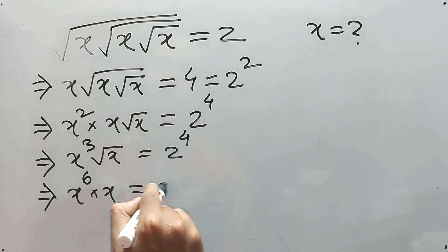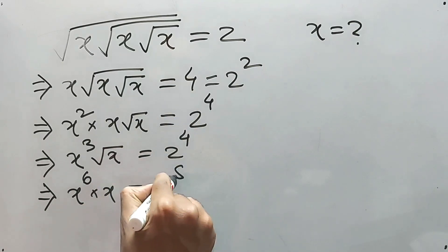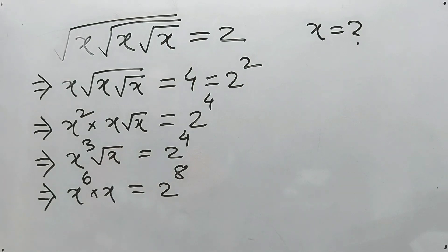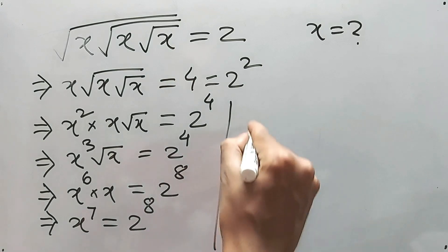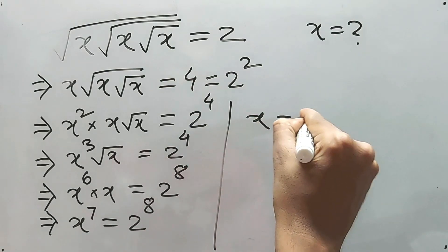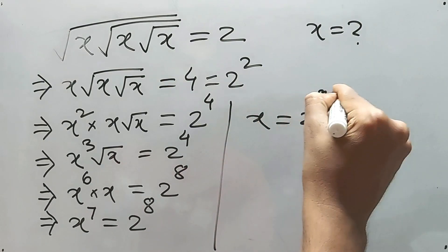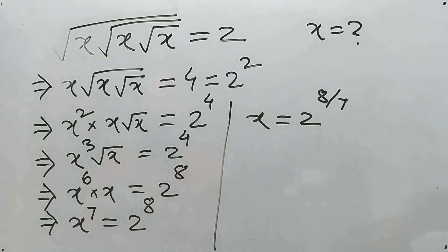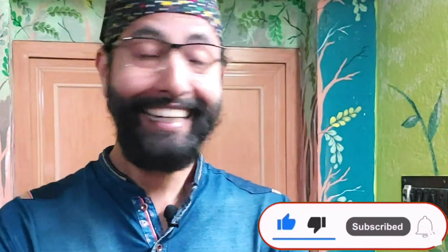And this one will be two to the power eight, right? So finally we are getting x to the power seven. Six plus one is seven, right? It's equal to two to the power eight. Now what is the value of this? I mean, what is the value of x? x is equal to two to the power eight by seven. That's it. Please like, share and subscribe this channel. Bye!